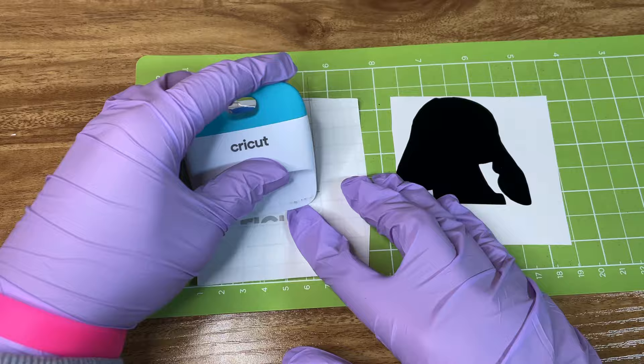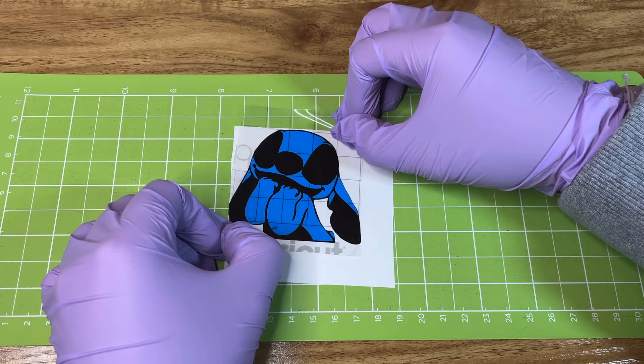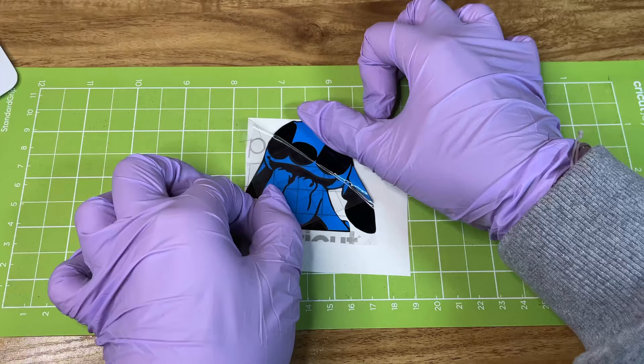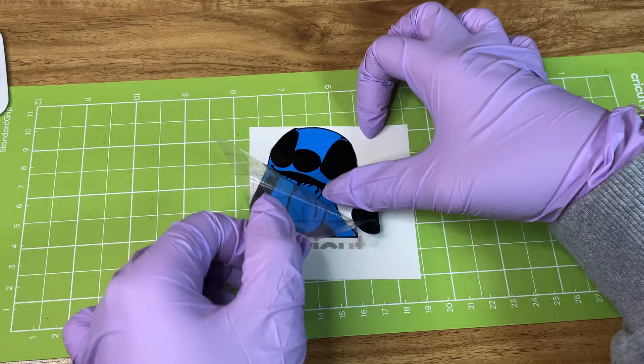Next up, you will be using your transfer tape to layer your vinyl. There is a trick to use if you want it to be perfect, which requires wax paper, but I decided to eyeball it today because I was feeling pretty bold.